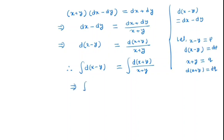So for the left hand side integral we have dp, and for the right hand side integral we have dq over q. So the left hand side gives p, and the right hand side gives ln q, plus a constant c.